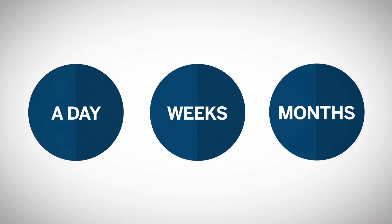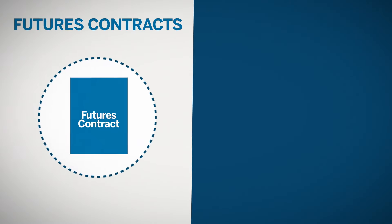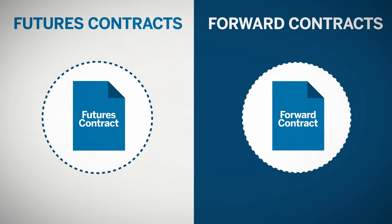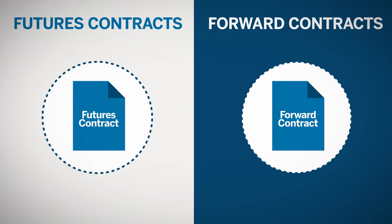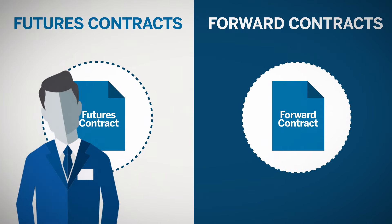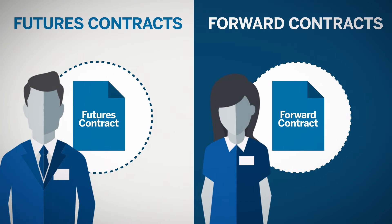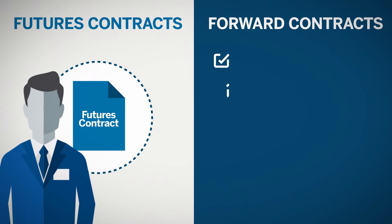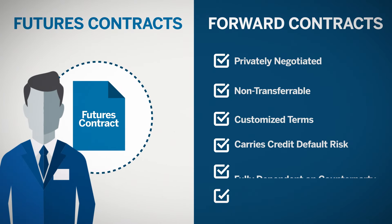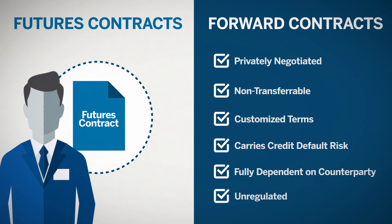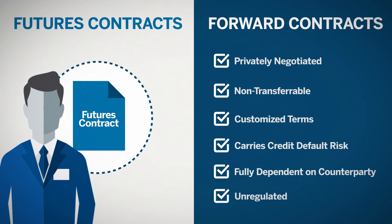Consider the following differences between futures contracts and forward contracts to see the advantages that futures contracts provide traders and other market participants. A forward contract is privately negotiated, non-transferable, has customized terms, carries credit default risk since it is privately negotiated, is fully dependent on the counterparty for payment, and is not regulated.